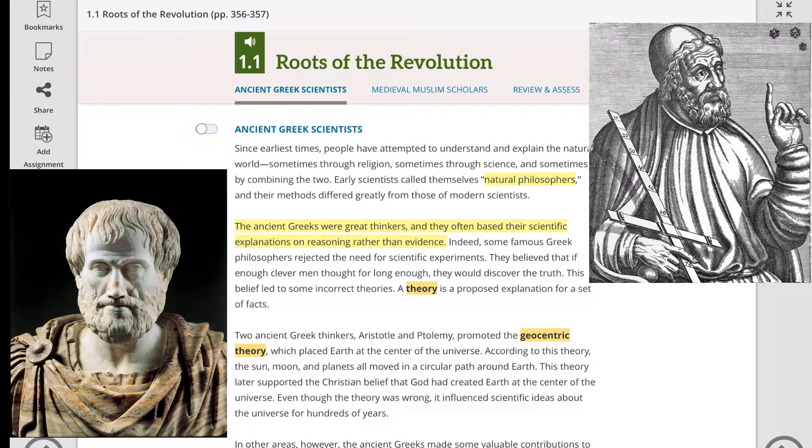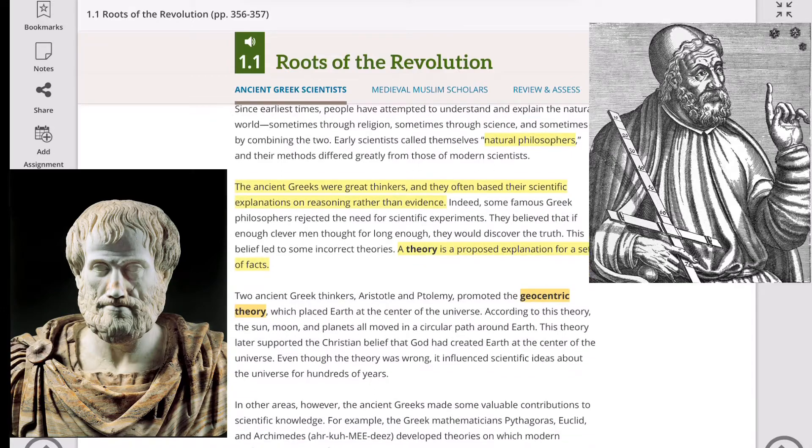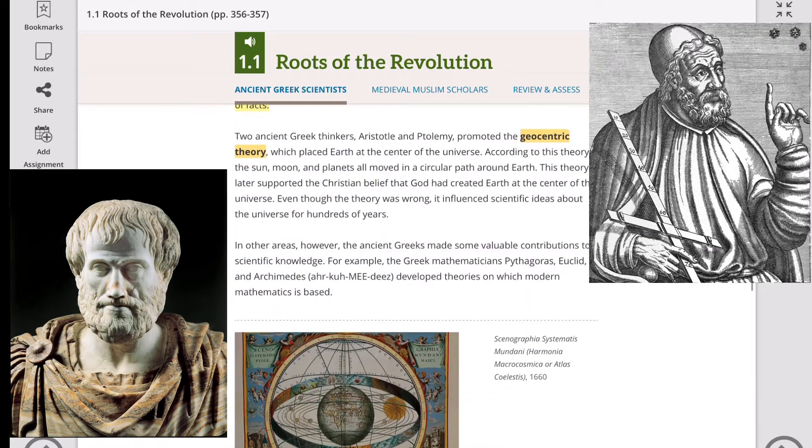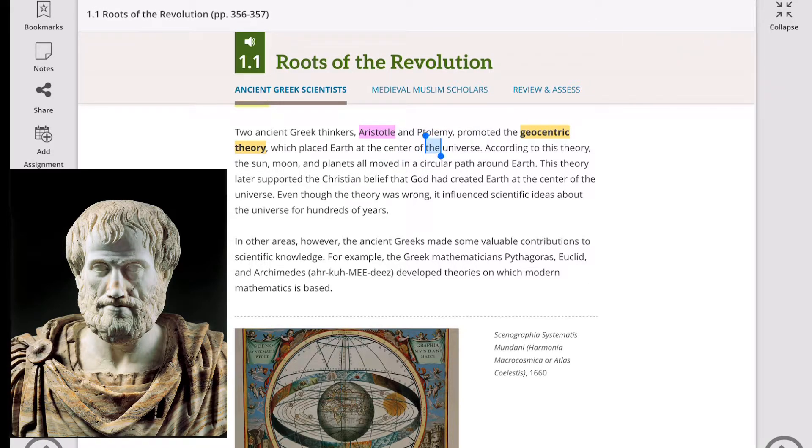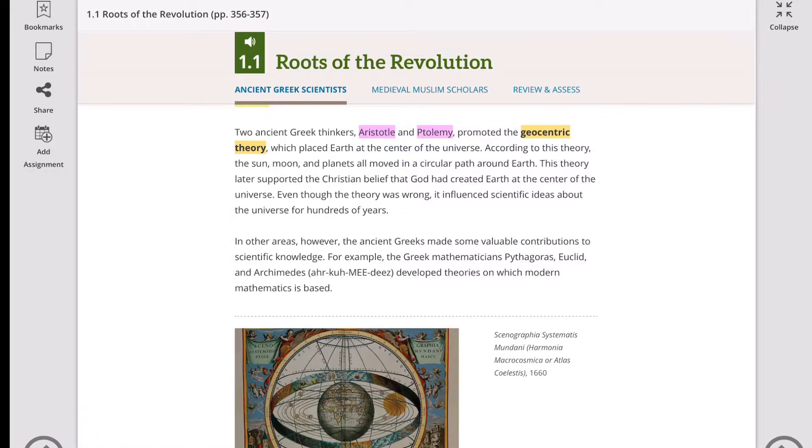For example, two Greek thinkers, Aristotle on the left side and Ptolemy on the right side of the screen, promoted geocentric theory. What is this geocentric theory? It placed Earth at the center of the universe. According to this theory, the sun, moon, planets, and everything moved in circular paths around Earth. This theory later supported the Christian belief that God had created Earth at the center of the universe.